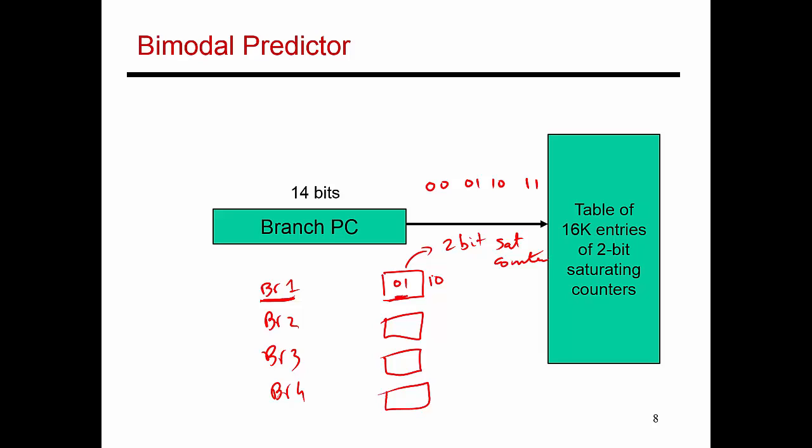Sometime later, I see branch 1 again. Again, the branch ends up being taken, so then I increment the counter value again and it becomes 1, 1. And let's say that branch 1 is very heavily biased towards being taken most of the time. So as I keep seeing it as being taken, taken, taken, I keep incrementing the counter value.